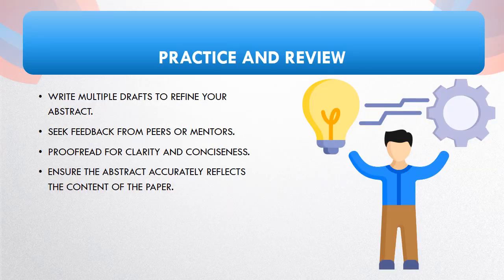Writing a strong abstract often entails multiple drafts. Practice by revising it several times, seeking feedback from peers or mentors for refinement. Proofread meticulously to ensure clarity and conciseness, and verify that the abstract accurately represents your paper's content. This iterative process hones your ability to craft a compelling abstract that effectively communicates your research findings and significance.